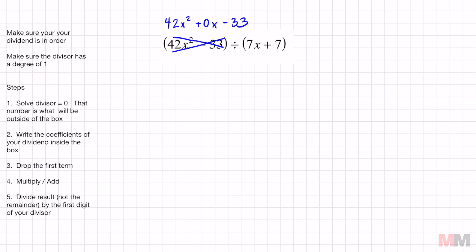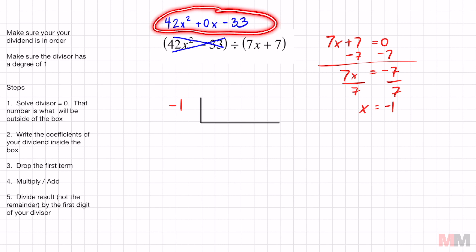We move on to step number one. Take 7x plus 7, set it equal to zero, and solve for x. Subtract 7, I get 7x equals negative 7 divided by 7, and I get x equals negative 1. That number is what's going to go right outside that box. So at least it's not a fraction this time. And we move on to step number two. So remember that version that I rewrote? Those are the numbers we're going to use. We're going to use the coefficients 42, 0, and negative 33 and slide those right inside this box.